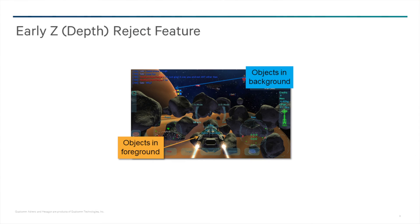Early Z depth rejection feature: Adreno GPUs are designed to be efficient and reject pixels which are occluded by previously drawn objects. We've designed this feature to increase overall graphics performance for large, complex scenes with opaque geometry. As long as the geometry is drawn in order from the front of the camera to the back, this depth culling happens automatically and efficiently.